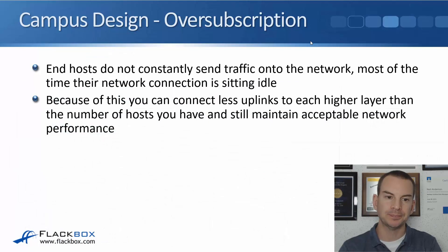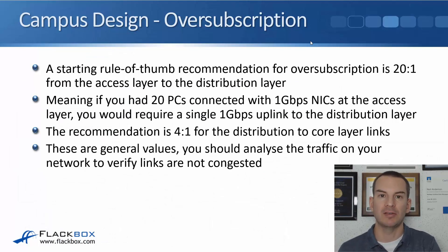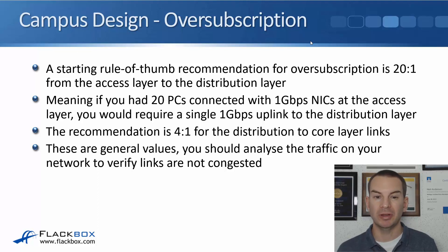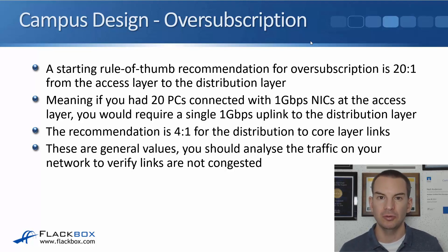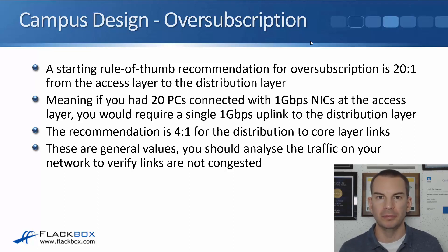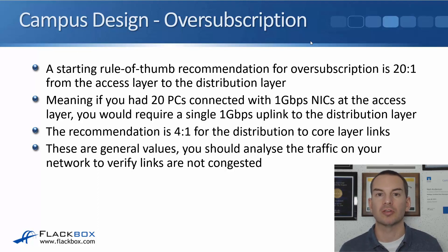They don't actually need that much bandwidth. A starting rule of thumb for oversubscription in your campus LAN is 20 to 1 from the access layer to the distribution layer — meaning if you had 20 PCs with 1 gigabit per second network cards at the access layer, you would require a single 1 gig uplink to the distribution layer. The recommendation is 4 to 1 for the distribution to core layer links. You should analyse the traffic on your network to verify that your links are not congested, as it depends on particular traffic patterns and what applications you're running.